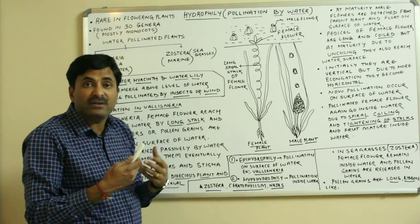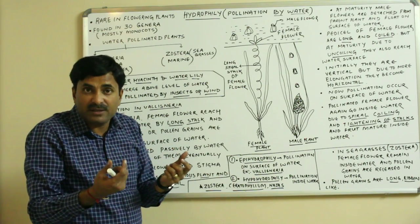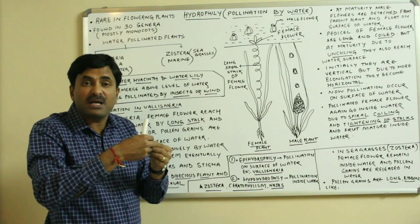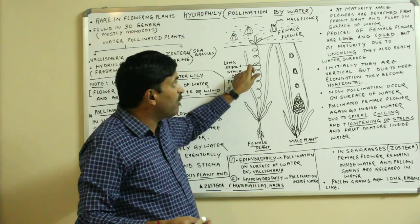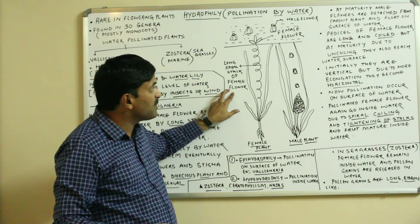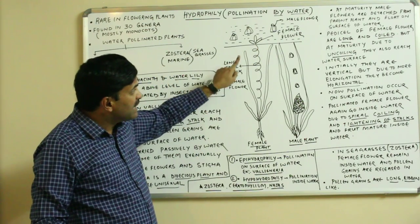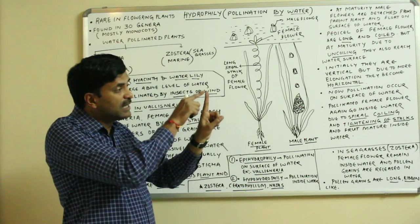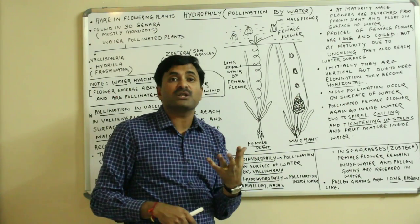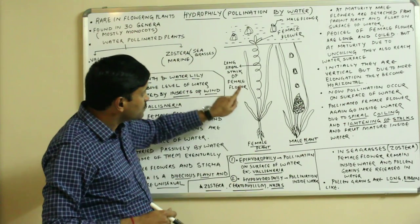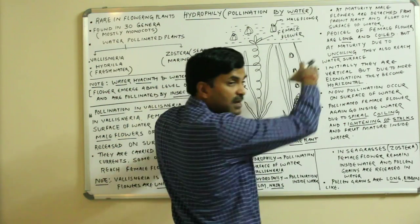At the time of maturity, this long spiral stalk of the female flower becomes uncoiled. When the coiled stalk uncoils, it elongates, and because of this elongation the female flower reaches the surface of the water. Initially the female flowers are vertical in position, but due to the elongation of the stalk they become horizontal at the surface.